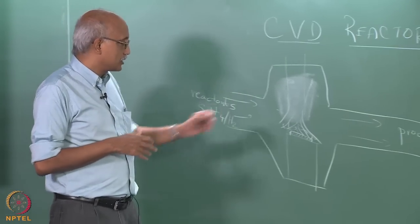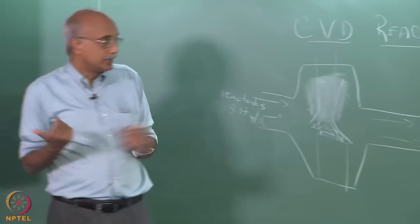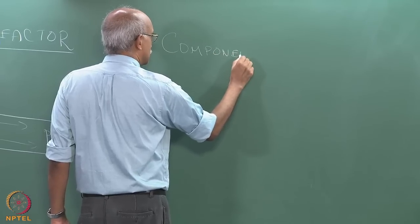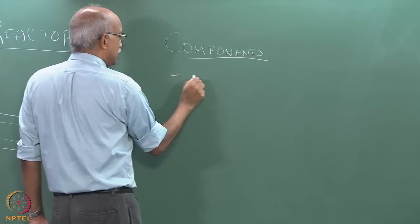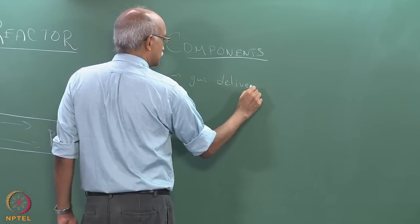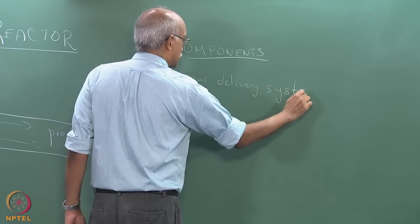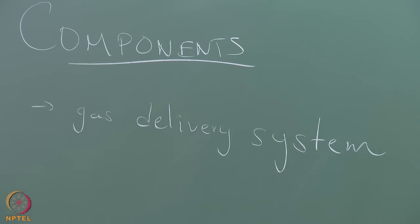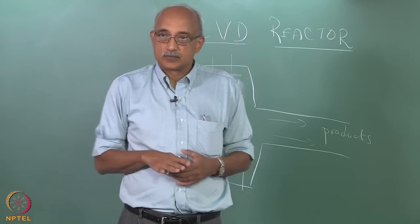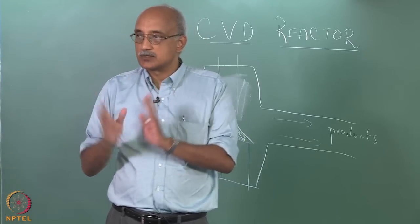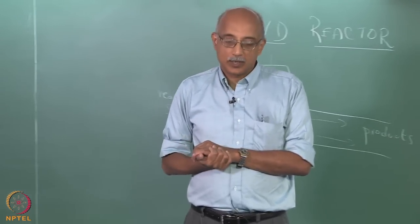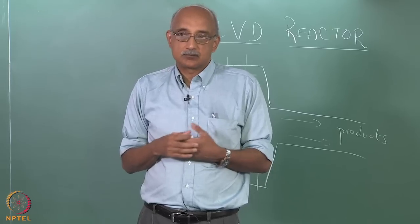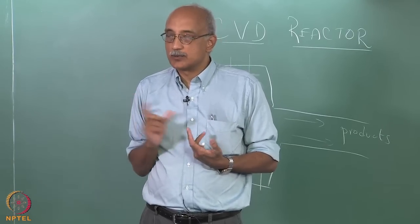Looking at the critical components of a CVD reactor: first, you need a good gas delivery system. All reactant gases have to be delivered to the reactor in such a way that they do not react on the way. Either you have multiple inlets for the reactive gases, or you ensure that temperature and pressure conditions during flow into the reactor are such that chemical reactions cannot happen that result in the formation of a condensate.